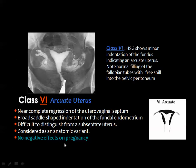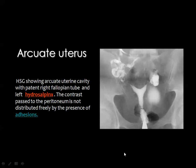Arcuate uterus is considered by many as a normal variant. There is some depression in the uterine fundus as seen on MRI and hysterosalpingography, and it has no negative effects on pregnancy. It may be associated with incidental findings such as hydrosalpinx on one side with a patent contralateral tube.